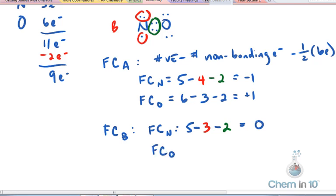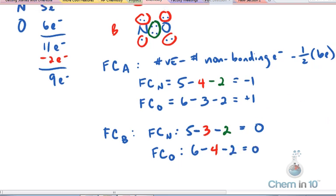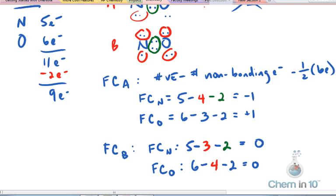Formal charge of oxygen is going to be its number of valence electrons, which is 6, minus the number of non-bonding electrons, which is 4, minus 1 half the number of bonding electrons, which is going to be 4, divided by 2, which is 2, so that's 0. Much, much better. Everyone's formal charge is 0, oxygen and nitrogen,